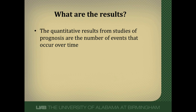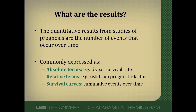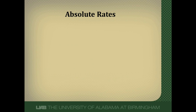The quantitative results from prognostic studies are reported as the number of events that occur over time, and these are commonly expressed in three ways. One, in absolute terms — for example, five-year survival rates. In relative terms, such as the risk from a prognostic factor. Or finally, as survival curves, which are the cumulative events over time. We'll look at each of these individually.